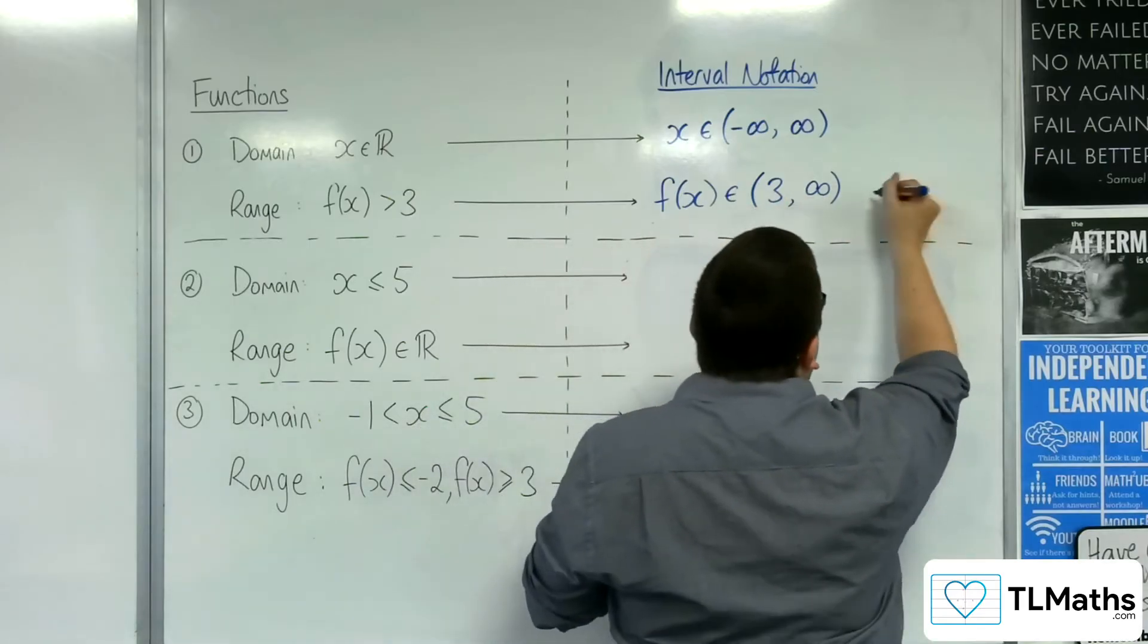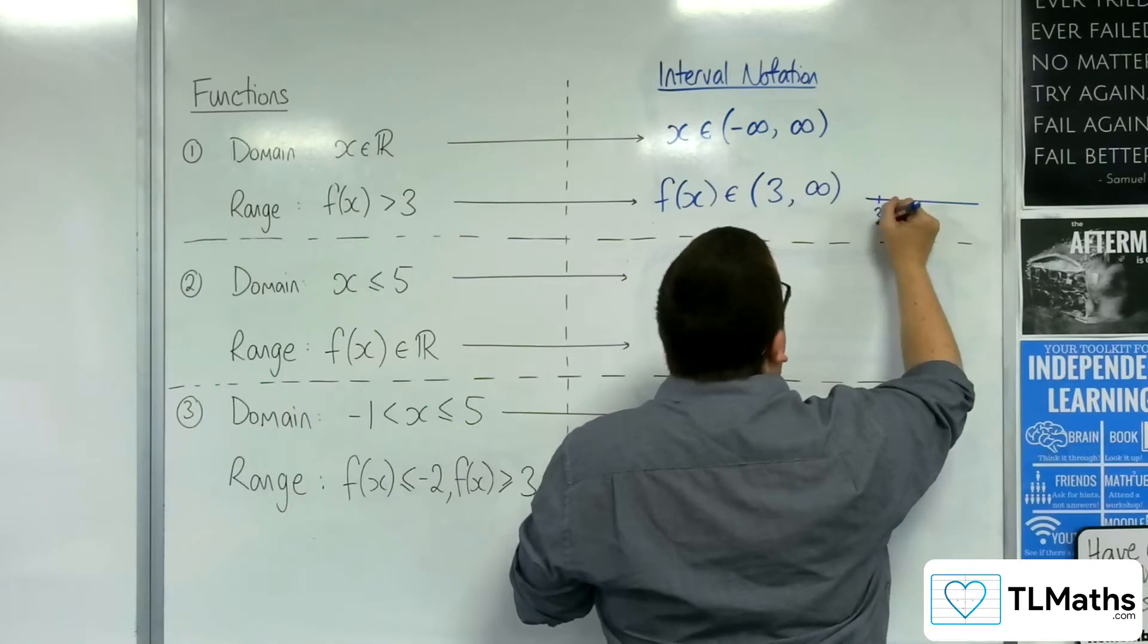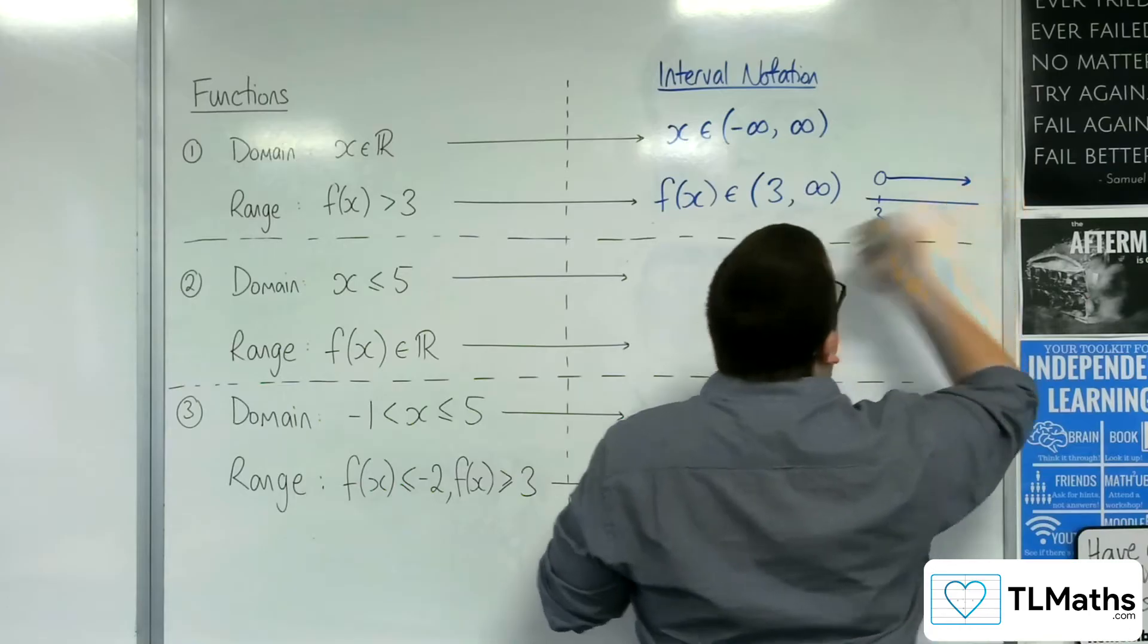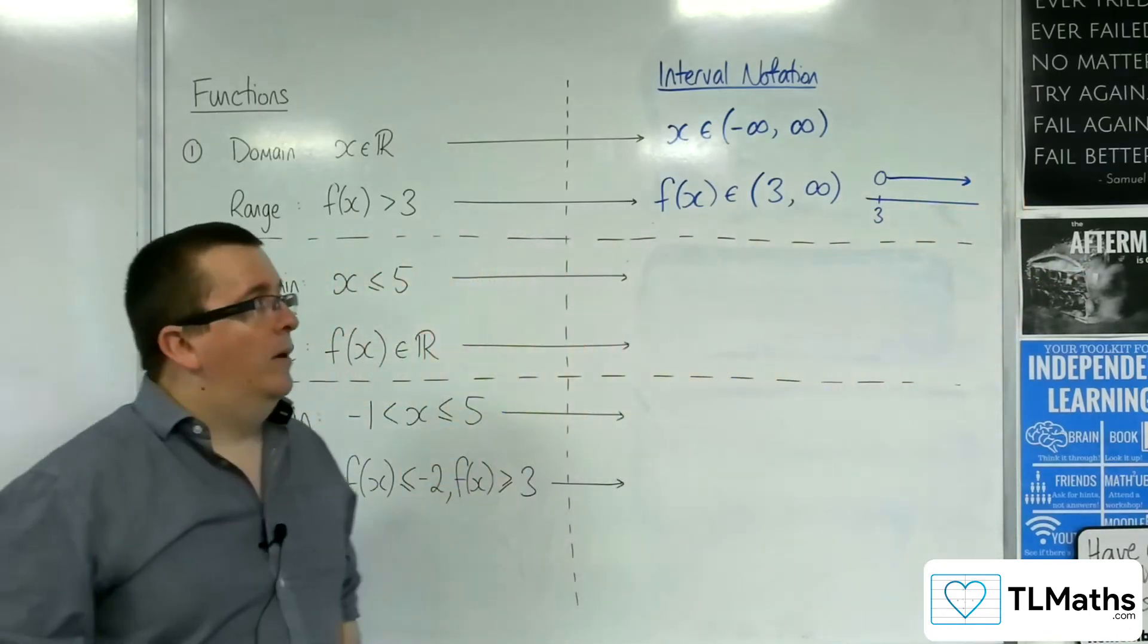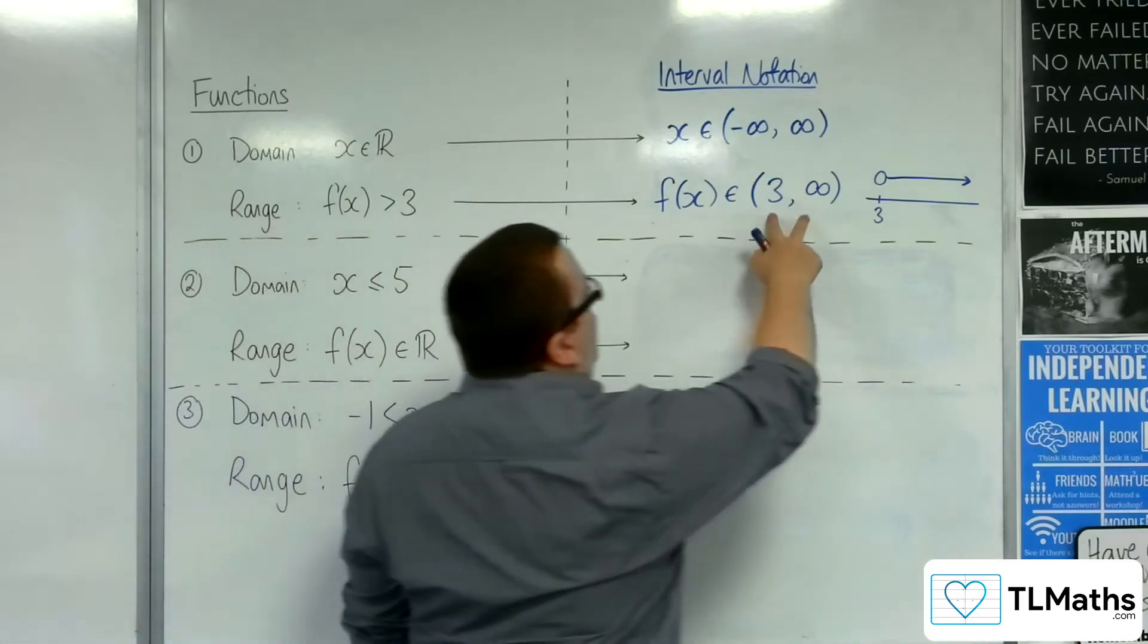So, what that means is, effectively, when you think about number lines, and you might have done this at school, going from 3, you're not including 3, so use a hollow dot, and it goes all the way along the number line up to infinity.